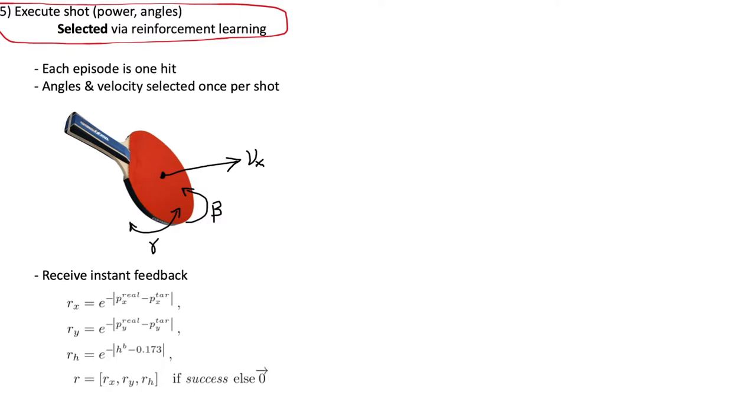So let's break down how this is framed as a reinforcement learning problem. Each episode only has one time step, which consists of a single hit and direct feedback based on the accuracy of that hit. The action space has three continuous parameters to set: the horizontal velocity to hit the ball with, and then two different bat angles. In table tennis, you might also want to have control over the Z and Y velocities, but they ignore that here to simplify things a bit.